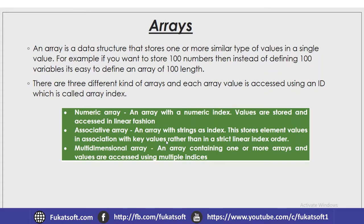An associative array is an array with a string as its index. If the array index is not in numeric form, we call it an associative array. It stores element values in association with key values rather than in a strict linear index order, so every key is paired against a value.